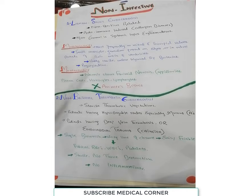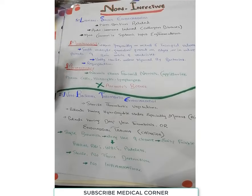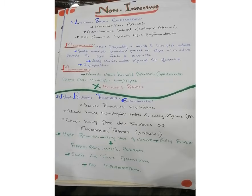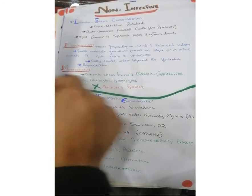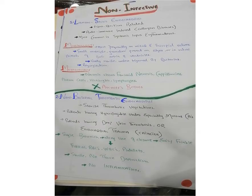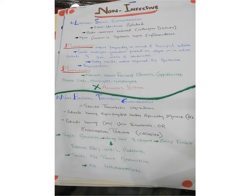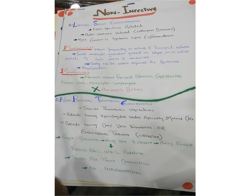Starting with non-infective endocarditis, the first type is Libman-Sacks endocarditis. It is a non-infection-related endocardial inflammation — there is no presence of bacteria. Libman-Sacks endocarditis is an autoimmune-induced endocardium problem, and the most common condition associated with it is systemic lupus erythematosus (SLE). The most commonly affected valves are mitral valves of the left heart, due to increased workload and increased mechanical stresses.